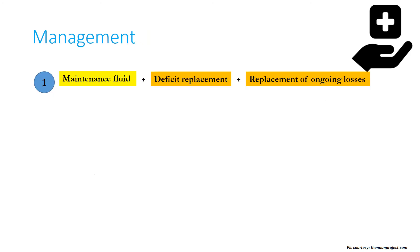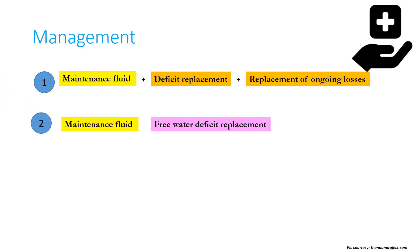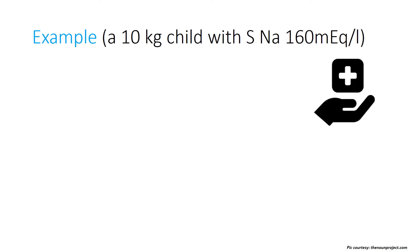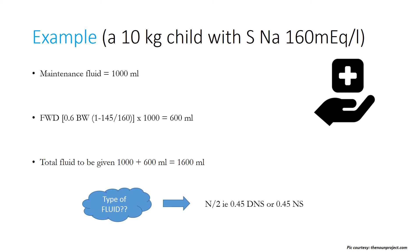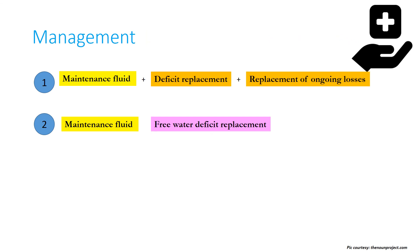Approach two: give maintenance fluid (1000 mL) plus free water deficit (600 mL) = 1600 mL total. Start with N/2 (0.45% DNS or 0.45% NS) and gradually reduce sodium concentration, since rapid reduction risks cerebral edema. Approach three — the most common, used at KGMC and mentioned in Nelson's — is to give maintenance fluid at 1.25 to 1.5 times the rate, yielding 1250–1500 mL, also starting with N/2.